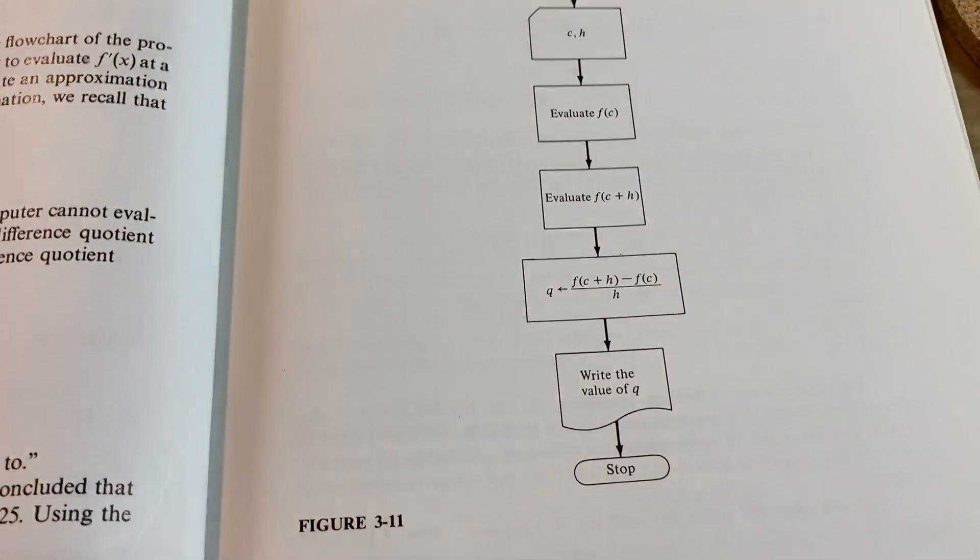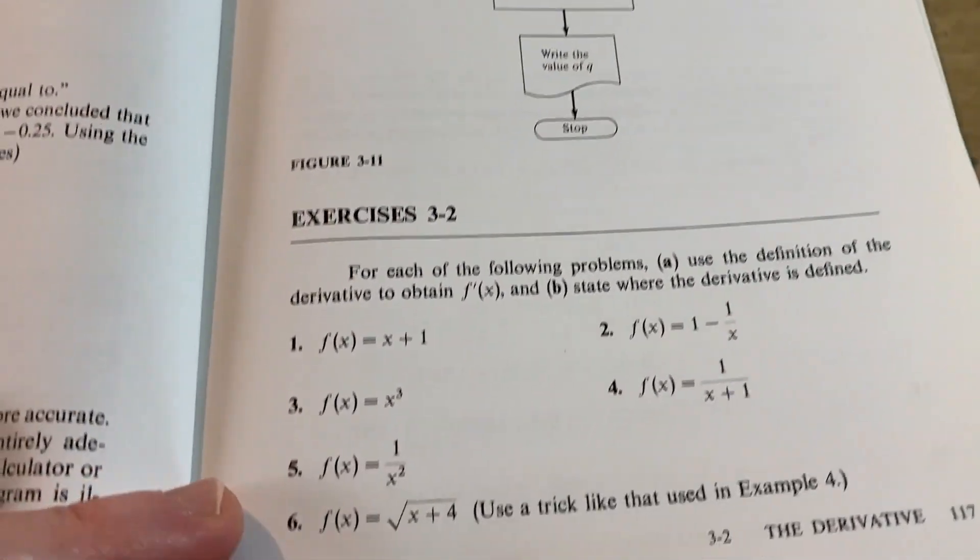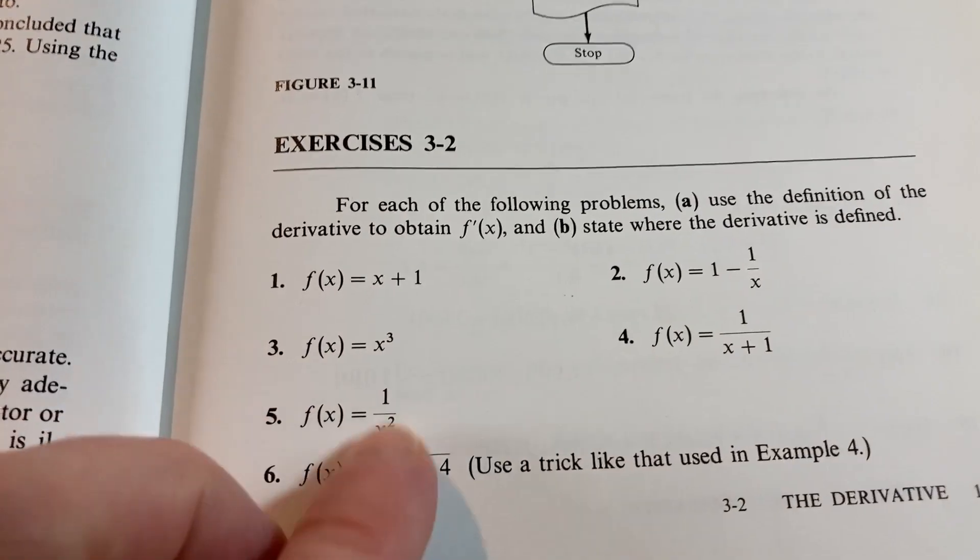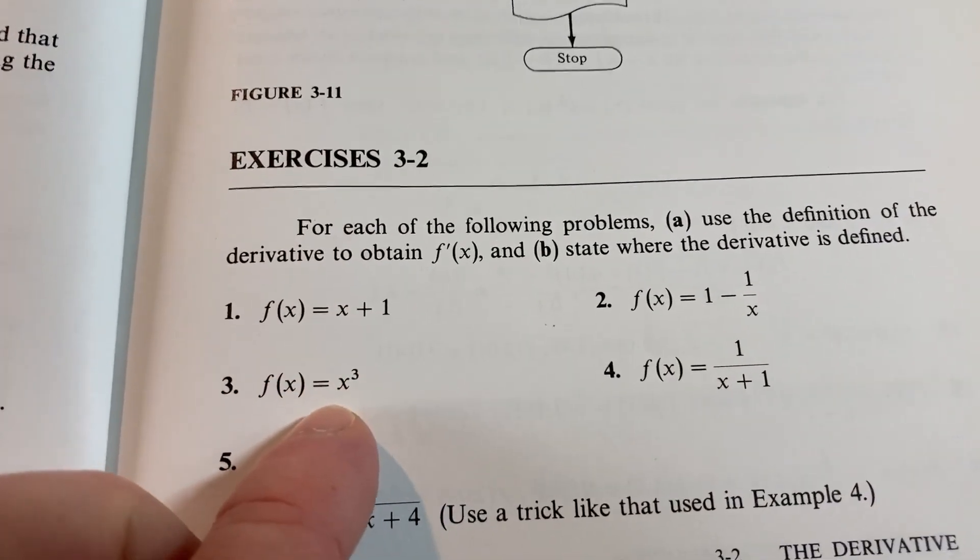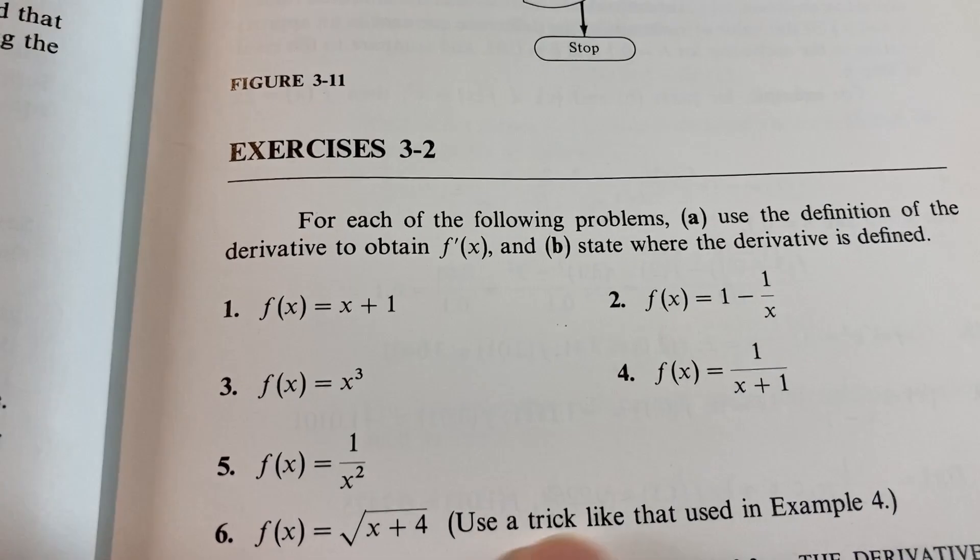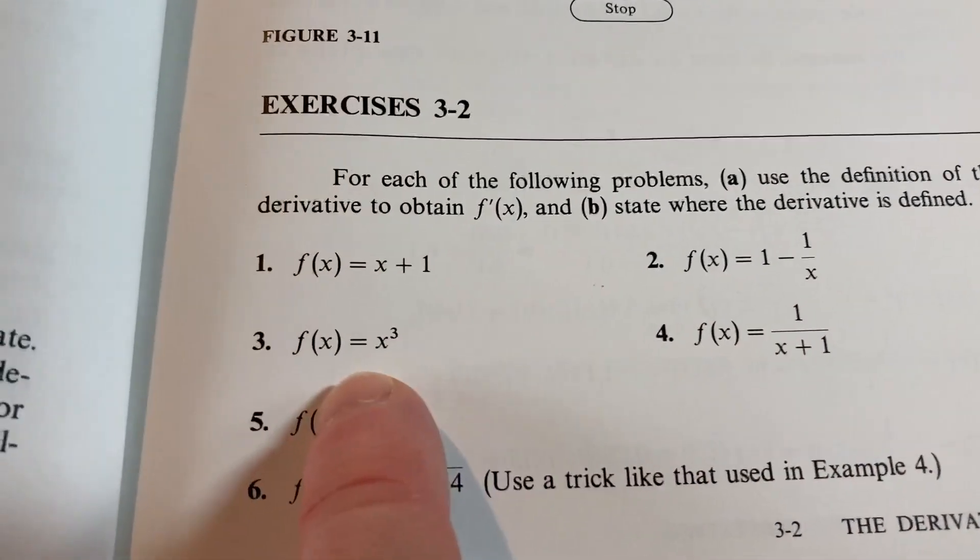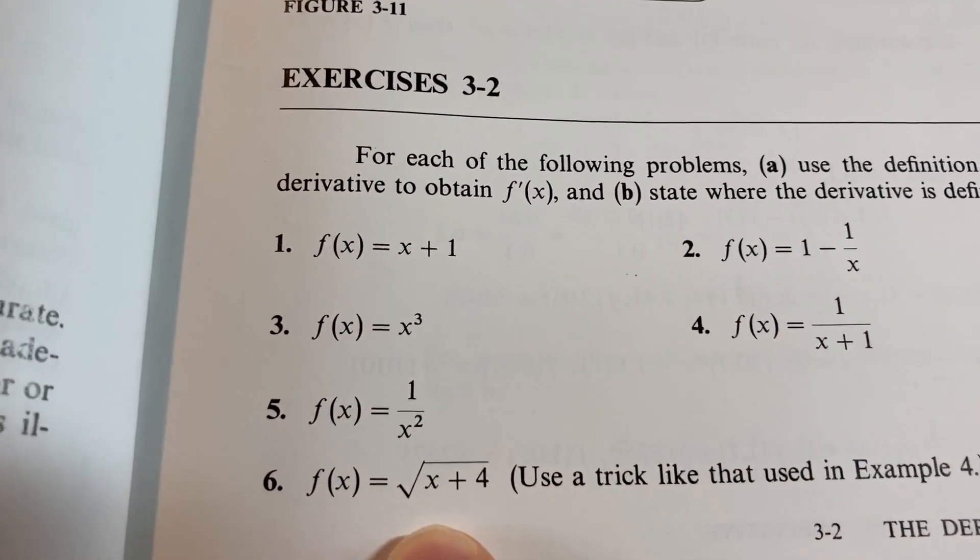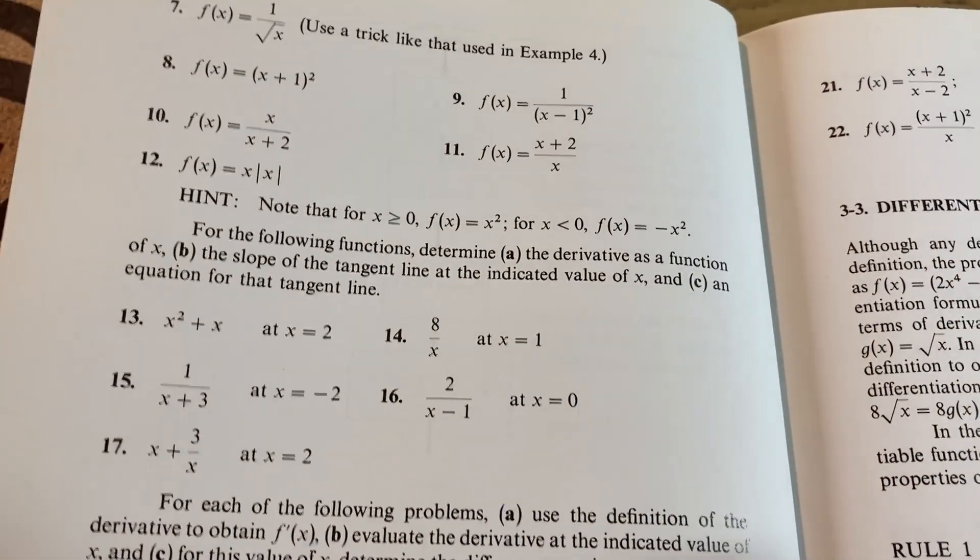Pretty cool. Here's another chart. Here's some of the exercises. So you can see that they're pretty simple. It says obtain the derivative using the definition. So x plus one is an easy example. However, they do get harder. So x cubed, one over x squared. Pretty cool. And you have a lot of exercises.